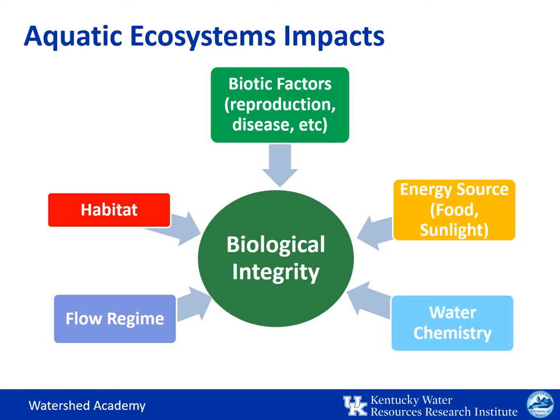There are also biotic factors: some species require specific spawning habitats or a specific host, and others may require specific conditions during portions of their life cycle; a community can also be impacted by disease. There are also energy sources — is there sufficient sunlight or leaf input during the seasonal fall cycle to sustain the food source for the organisms? And then there's water chemistry: is there sufficient dissolved oxygen, are nutrient levels too excessive, is there metals toxicity in the water? It's the biologist's job to figure out what may be causing a weakness and impacting the biological community.